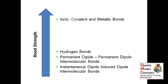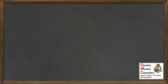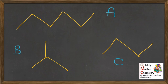Having listened to this presentation, you should be able to answer the following question. Looking at the three molecules shown here, A, B and C, put them in order of their boiling point from the lowest to the highest boiling point, and explain your reasoning.